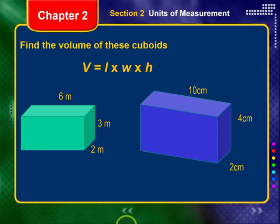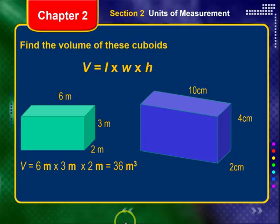Please press pause and calculate the volumes of these cuboids. For the first: 6 meters times 3 meters times 2 meters equals 36 cubic meters. For the second: 10 centimeters times 4 centimeters times 2 centimeters equals 80 cubic centimeters.